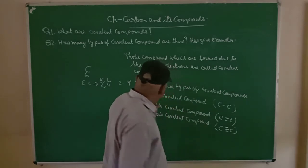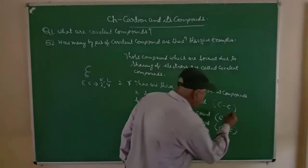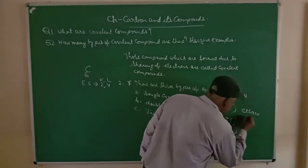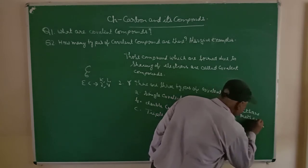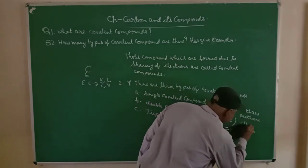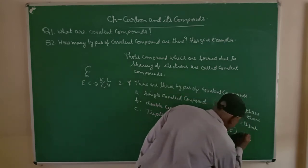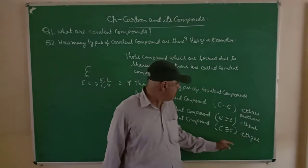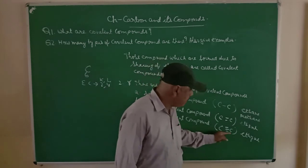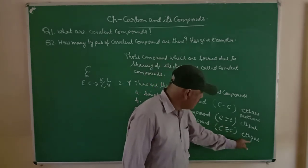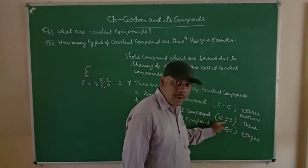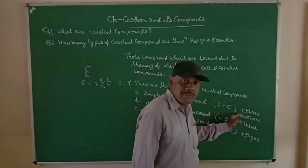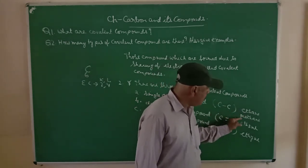For examples: an example of a single covalent compound is ethane, where there is a carbon-carbon single bond. An example of a double covalent compound is ethene, where there is a carbon-carbon double bond. And an example of a triple covalent compound is ethyne, where there is a carbon-carbon triple bond.